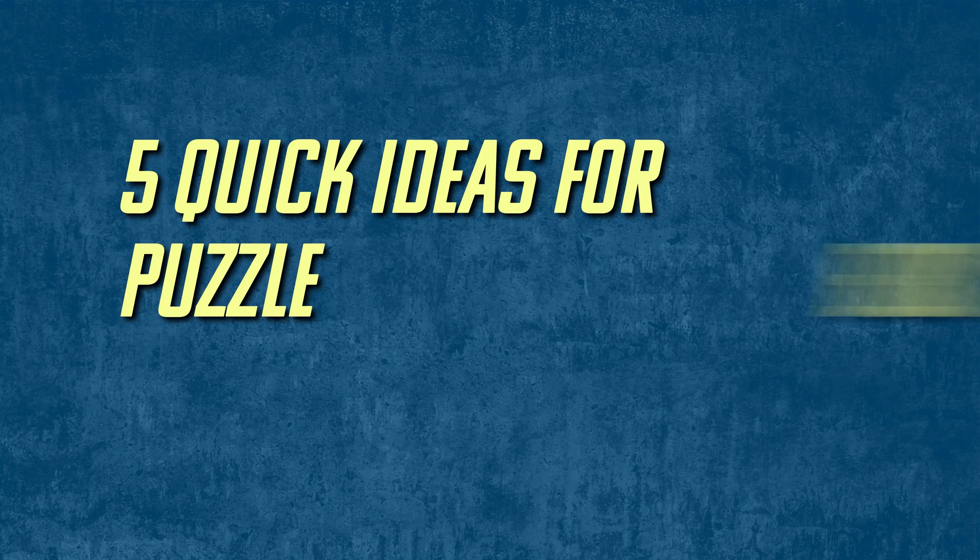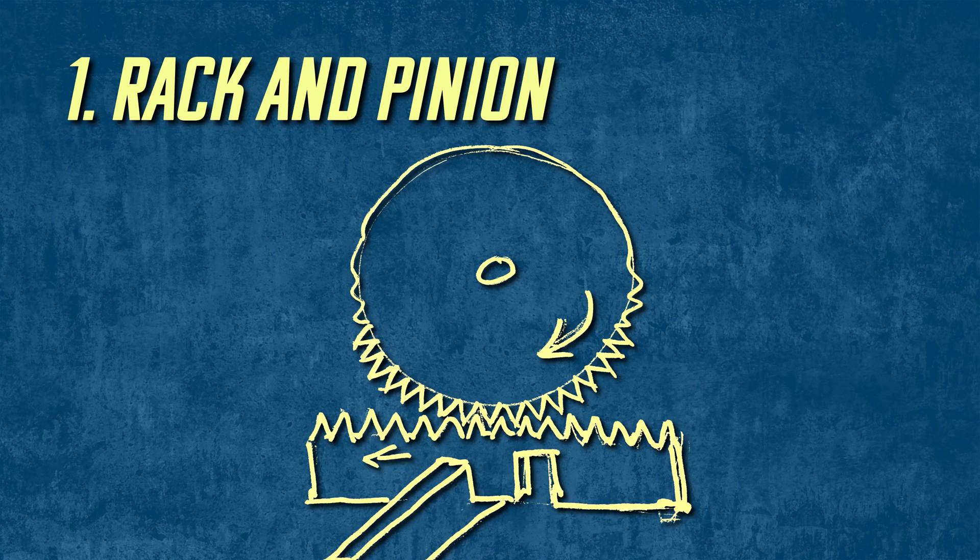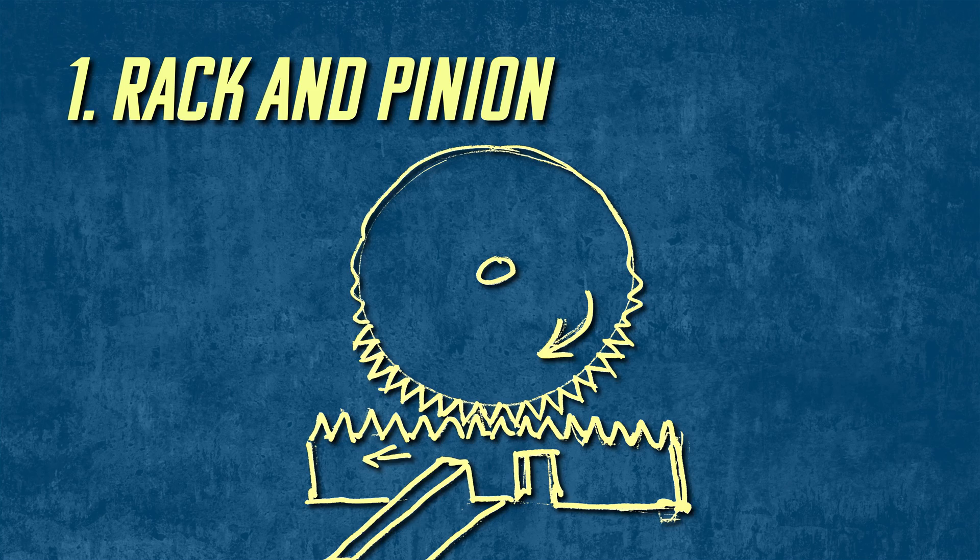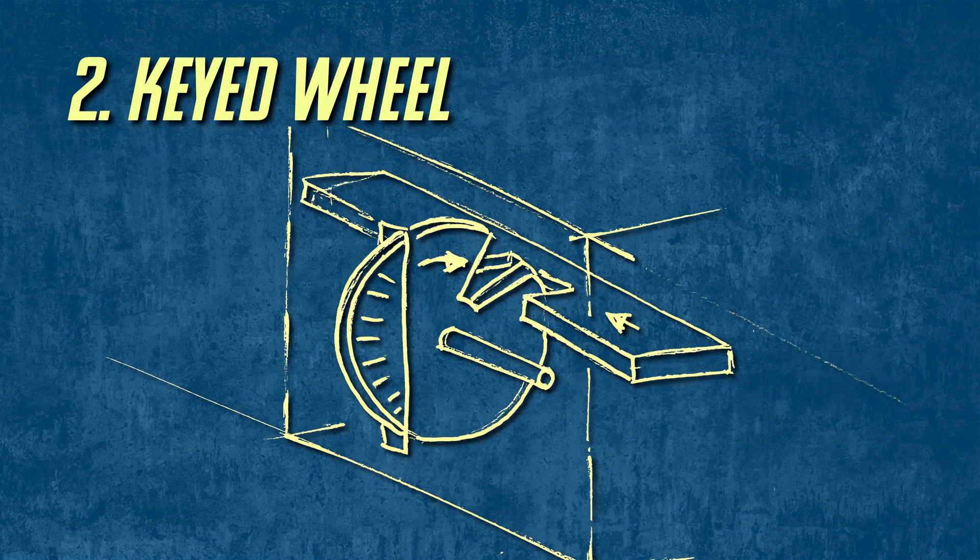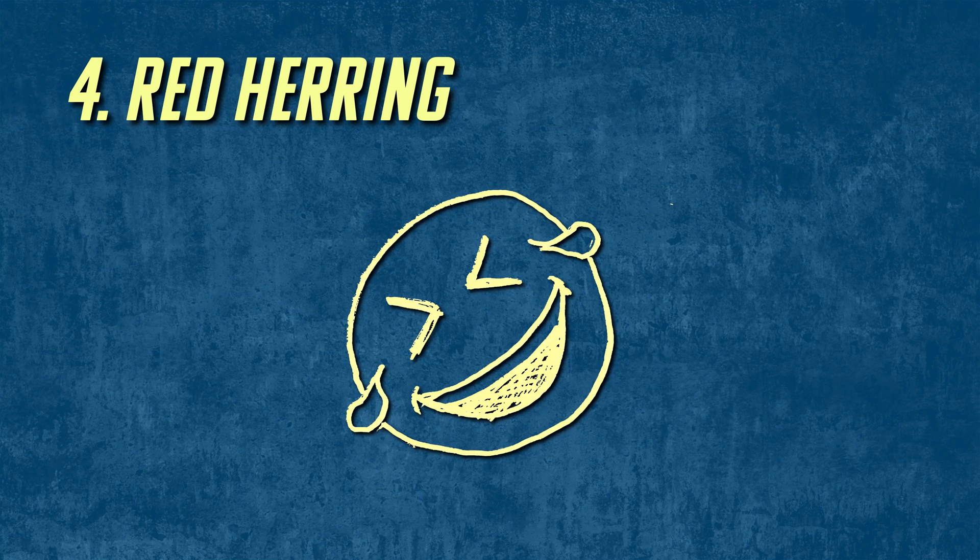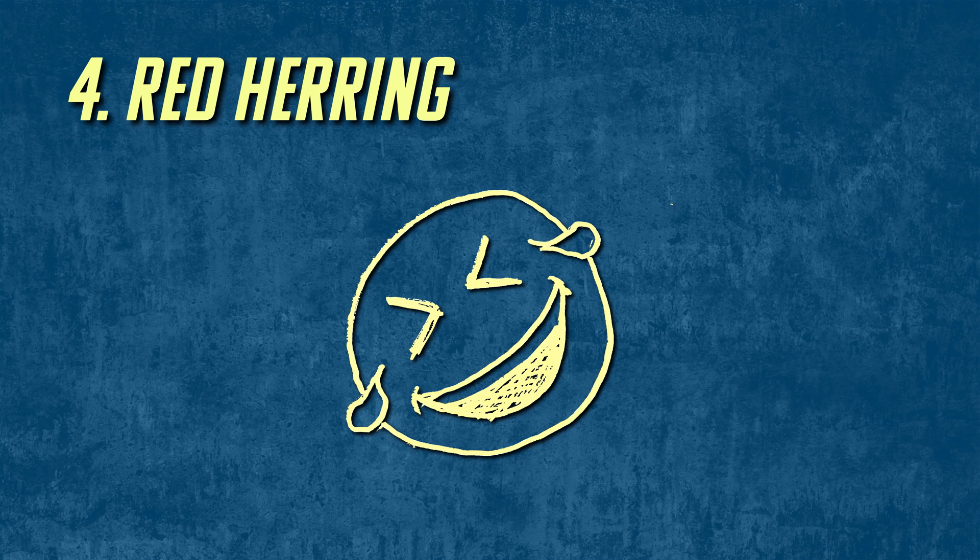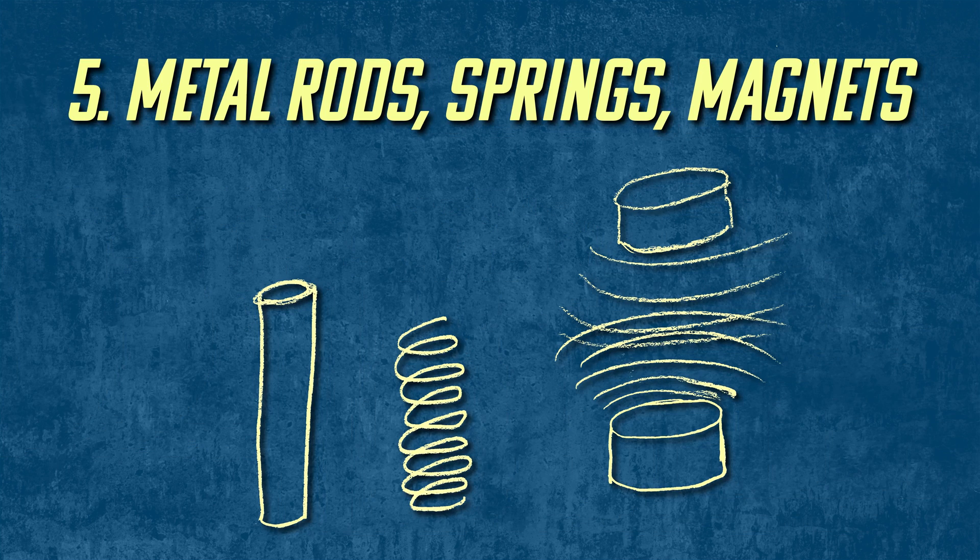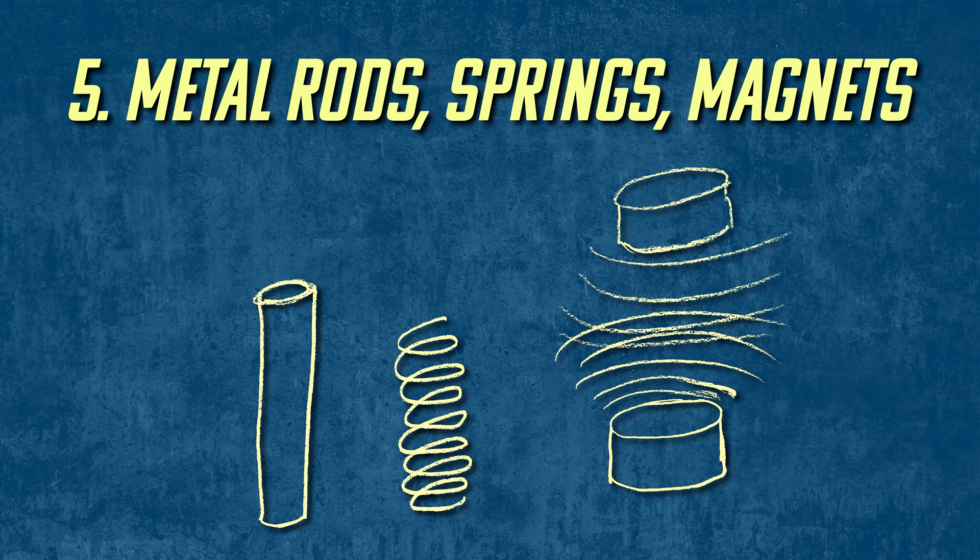Here are five more quick ideas for puzzle box mechanisms. Turn a gear or wheel that, like a rack and pinion, slides a panel. Have a hole in a wheel that lets a panel slide when it lines up. Have multiple panels that all have to line up before a locked panel can slide. Here's a mean one - have red herring parts that move but aren't used in the puzzle. And last, use metal pins, springs, or magnets, and there are a lot of things you can do with these.